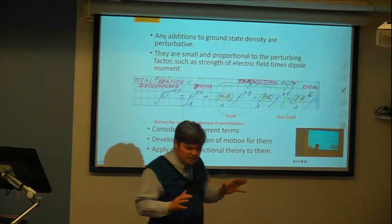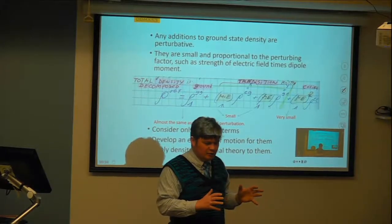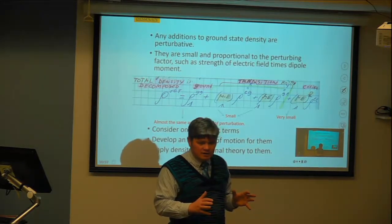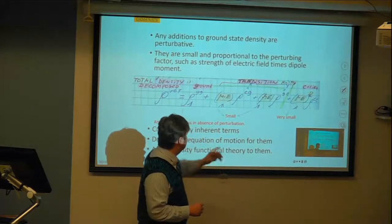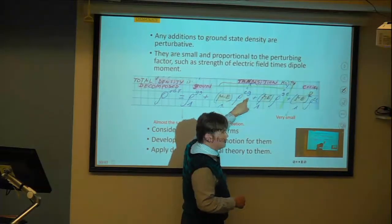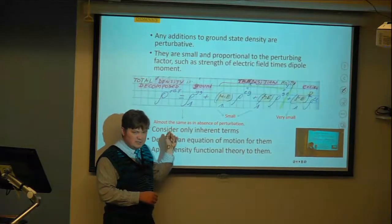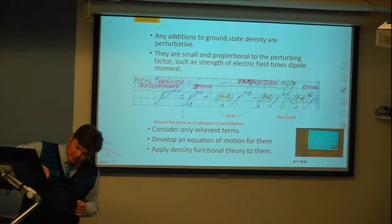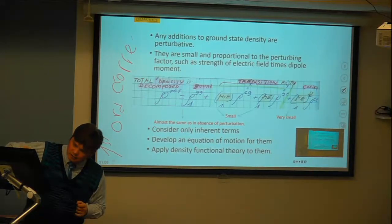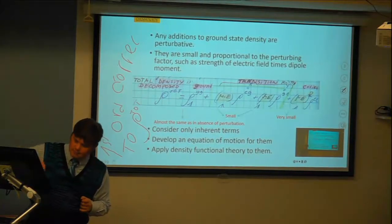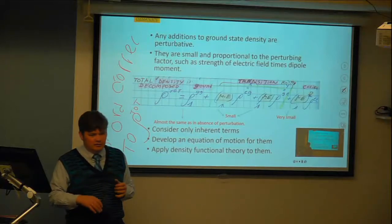The goal of excited-state theories, and more specifically TDDFT, is to find the first-order correction to the total density created by external radiation. If you find this first-order correction to the density, you can find the rest, including the spectrum.